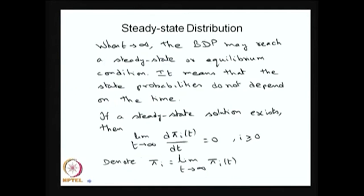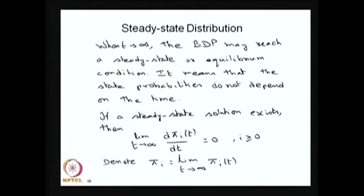Here I am discussing the steady state distribution. The limiting distribution is the limit as t tends to infinity of the probability p(i,j) of t, if it exists. The stationary distribution for the CTMC satisfies pi*Q = 0 with the summation of pi_i equal to 1. That is going to be the steady state or stationary distribution. As t tends to infinity, the birth-death process may reach a steady state or equilibrium condition.